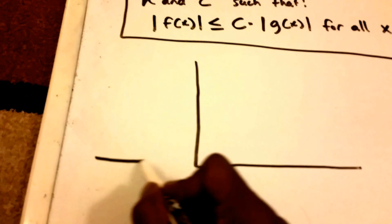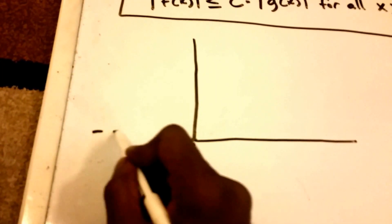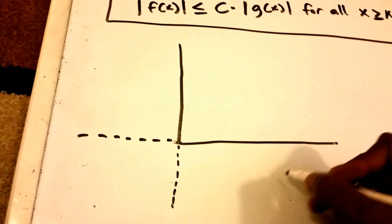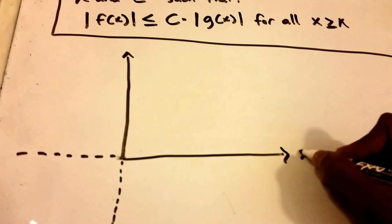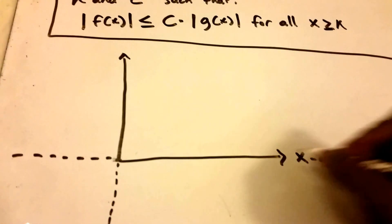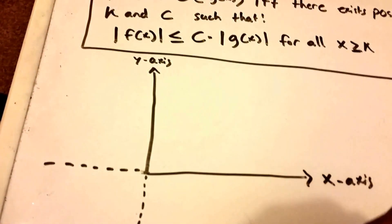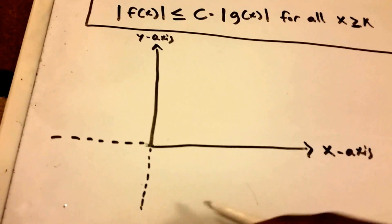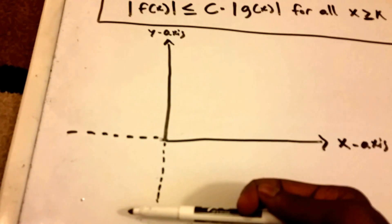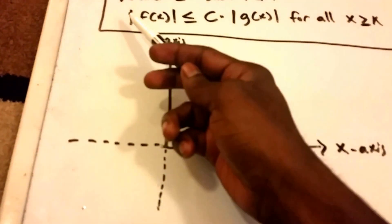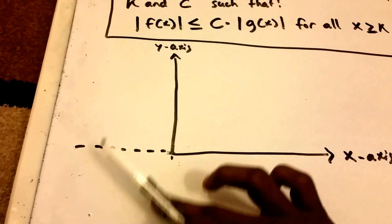Of course you might know of a two-dimensional graph, maybe it looks something like this, where this is the x-axis and here is the y-axis. And then of course over here would be the negative values and down here would be negative values as well. But according to our definition here, all we have to worry about is the positive quadrant.